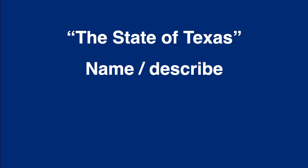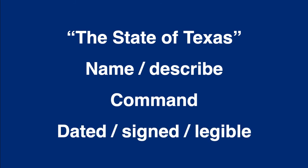A search warrant must contain the following requisites: it must run in the name of the State of Texas; identify as closely as possible that which is to be seized and name or describe the person, place, or thing to be searched; command any peace officer of the proper county to search forthwith for the person, place, or thing named; and be dated and signed by the magistrate, with the magistrate's name appearing in clearly legible handwriting or typewritten on the form with his or her signature.